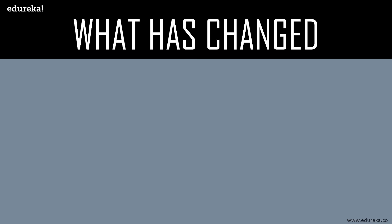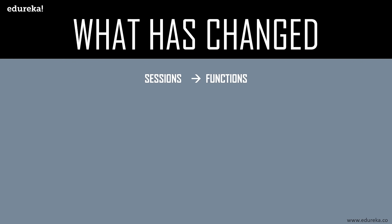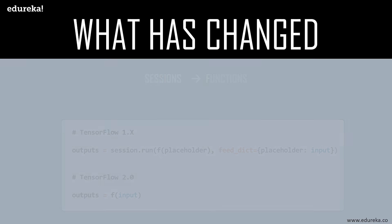Another major change is functions instead of sessions. A session.run call is almost like a functional call — you specify the inputs and the function to be called and get back a set of outputs. In TensorFlow 2.0 you can decorate a Python function using tf.function to make it run via JIT compilation, so TensorFlow runs it as a single graph. This allows TensorFlow to gain all the benefits of graph mode such as performance optimization, node peering, kernel fusion, and more. For portability, the function can be exported or re-imported, allowing users to reuse shared modular TensorFlow functions. In TF 1.x you'd use session.run with a placeholder; in TF 2.0 you just create a function.